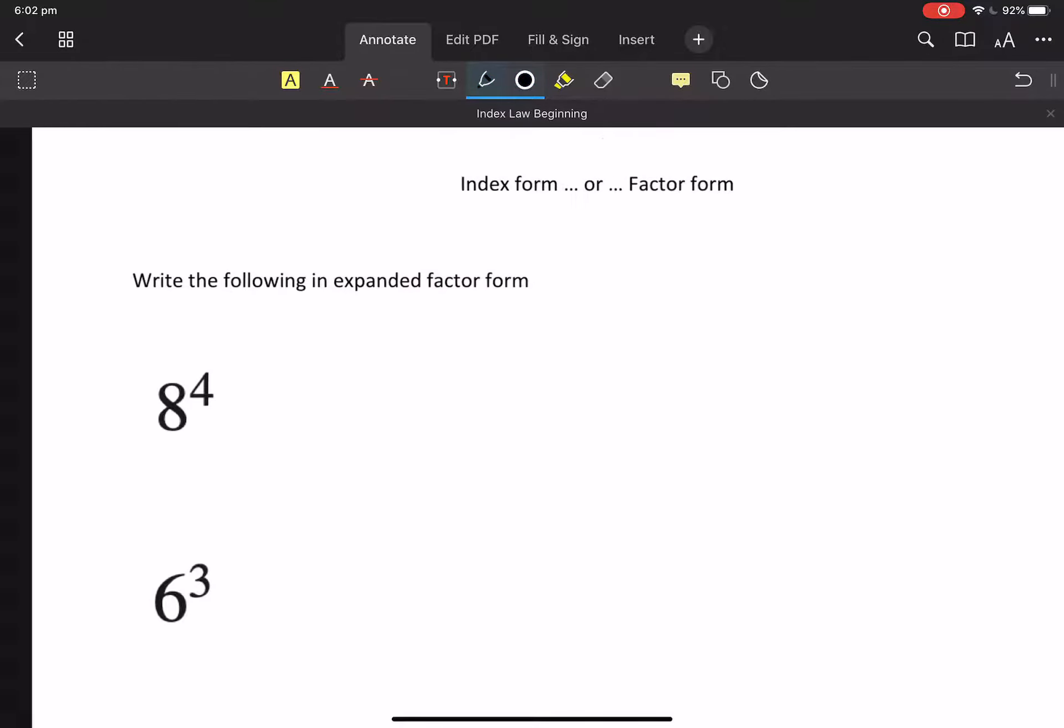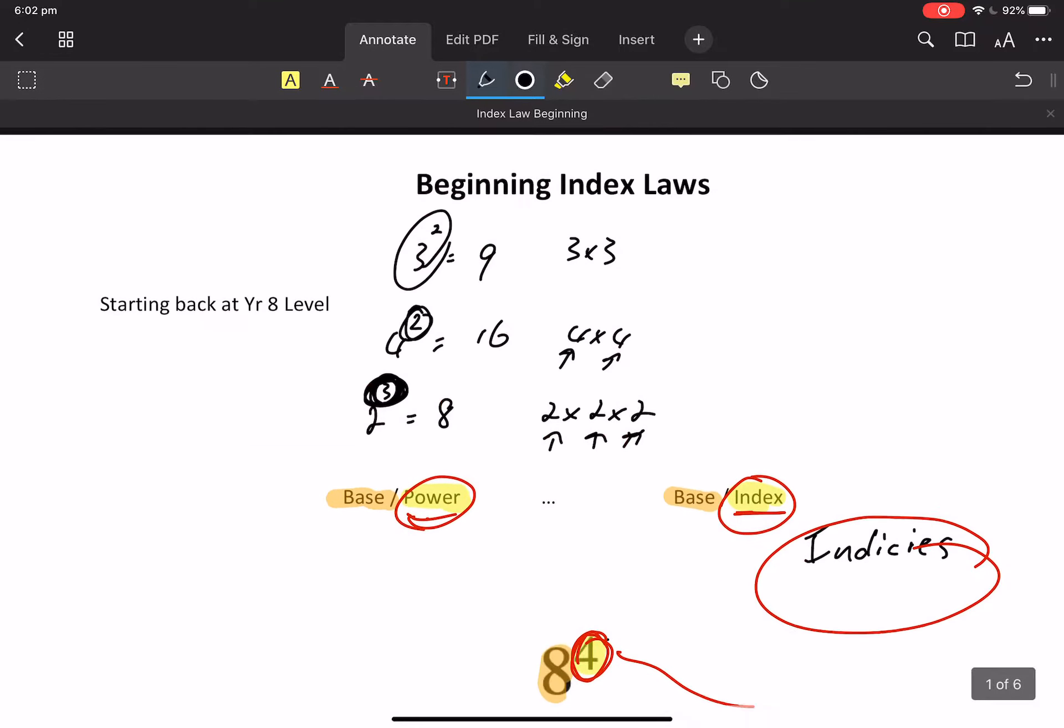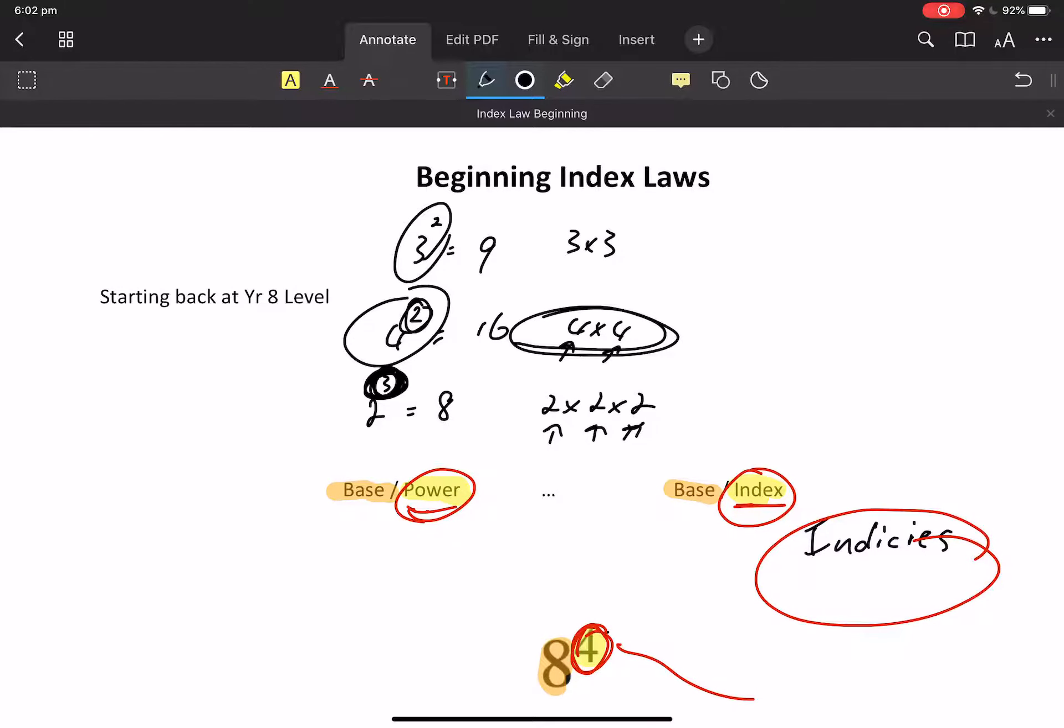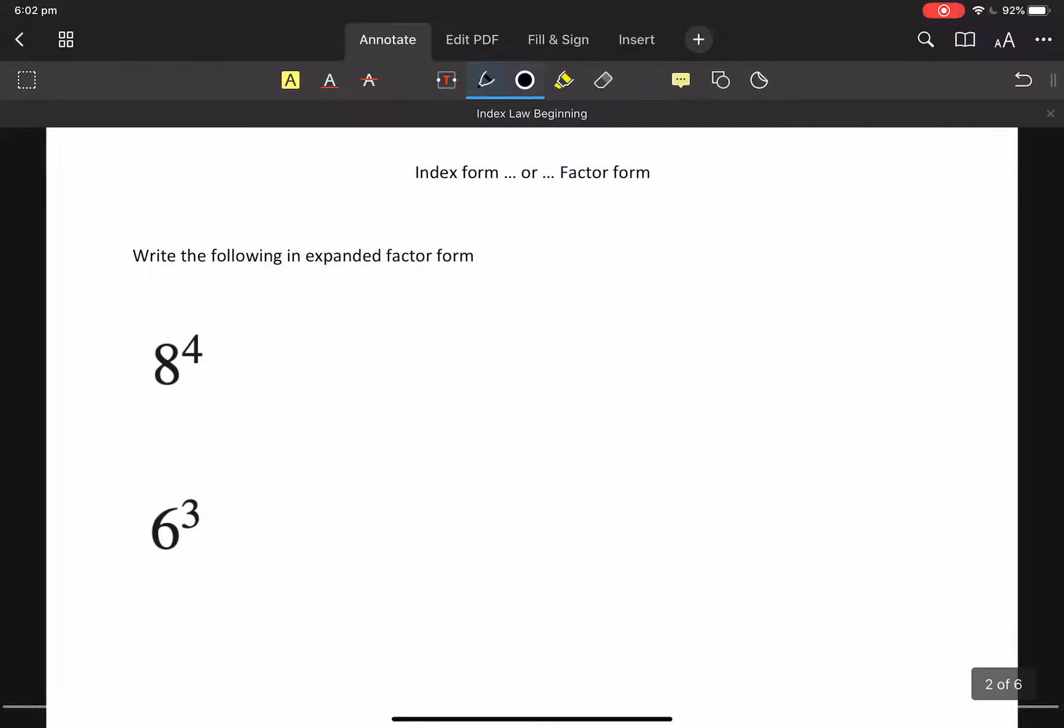Some things we need to be able to do. Remember up here with our 4 squared is 4 times 4. This thing here is called a factor form or it's expanded factor form. And that can be a question in your test. So we've got index form or factor form. We're going to write the following in expanded factor form. The word expanded gives you a hint that we're going to make this bigger. 8 to the power of 4, there are 4 eights all multiplied together. This 4 tells me that there are 4 of the 8s multiplied together. We don't need to get an answer.